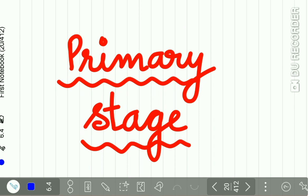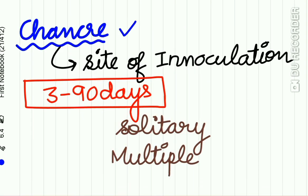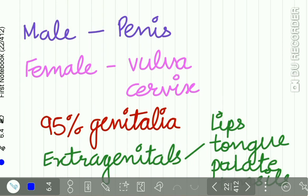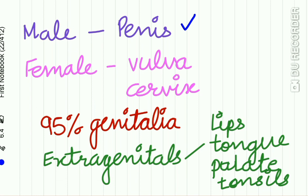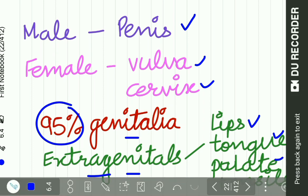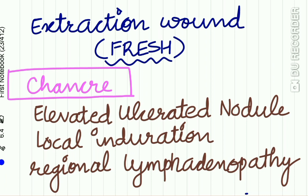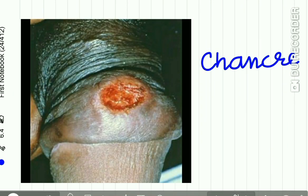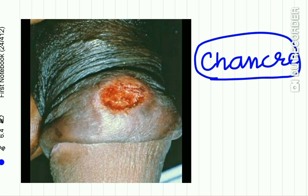In the primary stage, the lesion is called a chancre, which occurs at the site of inoculation within 3 to 90 days of infection. The lesion may be solitary or multiple. In males it is mostly seen on the penis; in females on the vulva or cervix. 95% of chancres occur in the genitalia, but due to altered modes of sexual contact, extra-genital sites like the lips, tongue, palate, and tonsils may also be affected. Chancre has also been found on fresh extraction wounds.